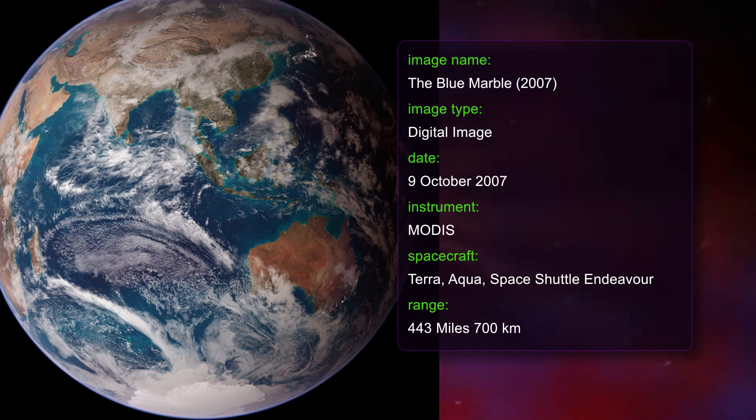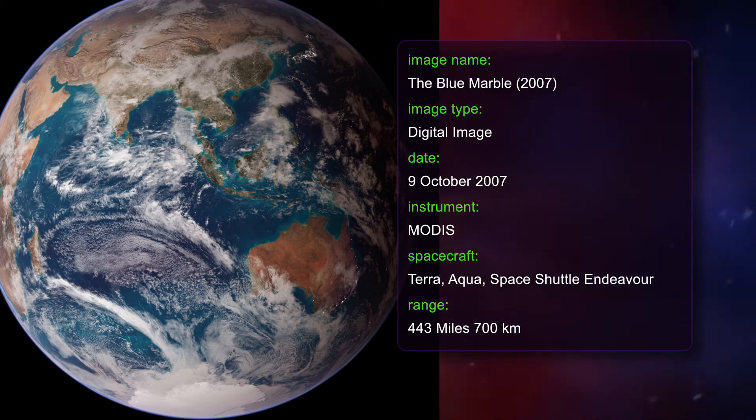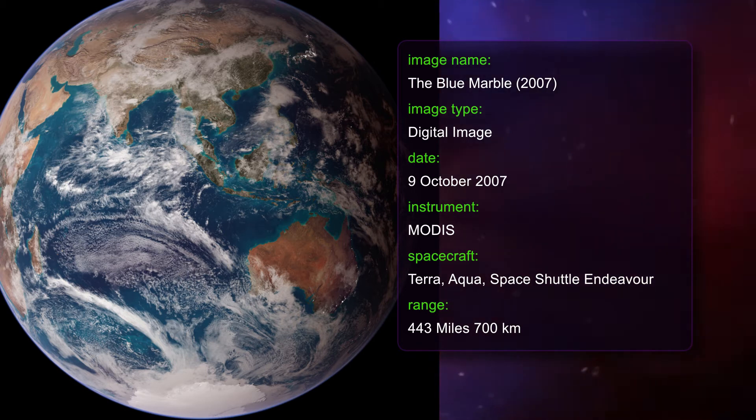Visualizers wrapped these layers around a globe, set it against a black background and simulated the hazy edge of Earth's atmosphere.